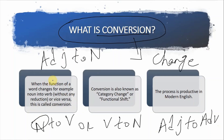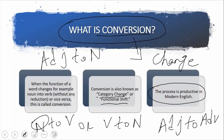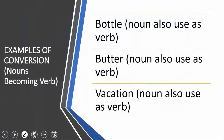Noun کو ہم اس لئے پہلے ذکر کرتے ہیں کیونکہ جب بھی کوئی چیز بنتی ہے تو اس کا کوئی نام ہوتا ہے۔ پہلے چیز بنتی ہے، پھر اس کا process آتا ہے، پھر اس کی خوبی دیکھی جاتی ہے۔ جیسے car کا وجود نہ ہو تو نام ہی نہیں، اور نام نہ ہو تو fast car یا slow car کیسے کہیں گے۔ Conversion کو دو اور نام بھی دیے جاتے ہیں: category change یا functional shift۔ Modern English میں یہ process بہت common ہے۔